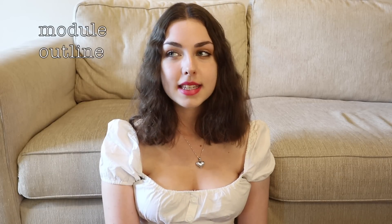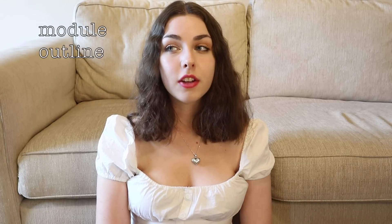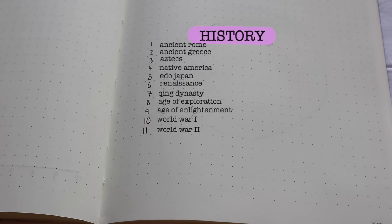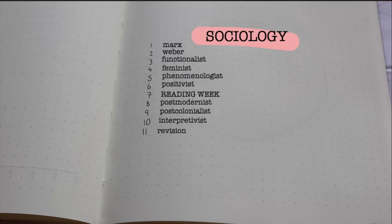You may also want to do a module outline list. At the beginning of my modules I often get a list of topics we're doing each week. You could put this at the start of your notes so you always know what you're going to study that week, or you could put it in your monthly spread or semester overview. I haven't done one of these yet but I kind of want to.